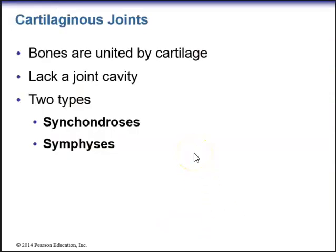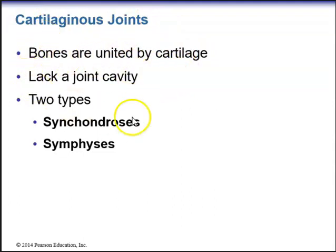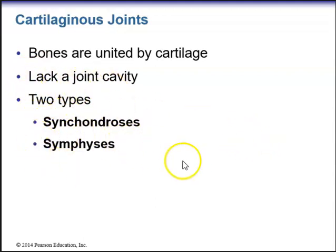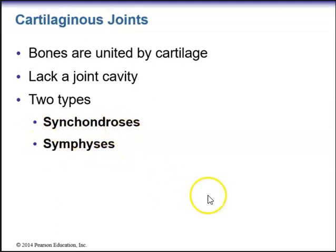The next structural classification of joints are cartilaginous joints, where bones are united by cartilage and lack a joint cavity. There are two types: synchondroses and symphysis. When you see the root 'chondro,' think cartilage.